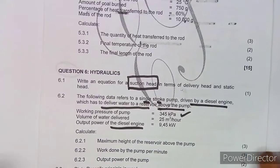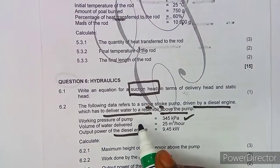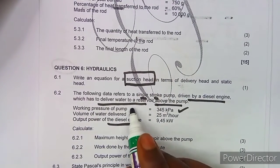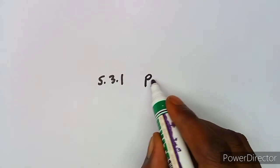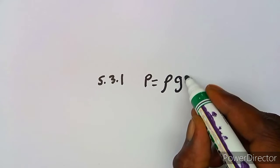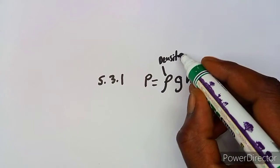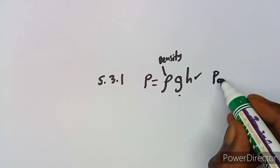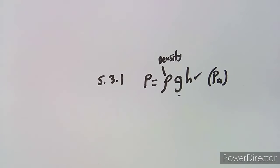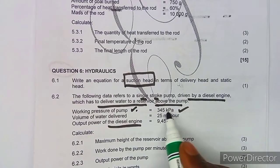The first question is to calculate the maximum height of the reservoir above the pump. Whenever you work with this type of question, take note there is a mean working pressure. We take advantage of this pressure because we know that pressure is equivalent to ρgh — where ρ is the density of water, g is gravitational acceleration, and h is the height — and pressure is measured in pascals.